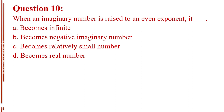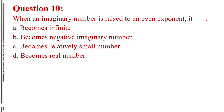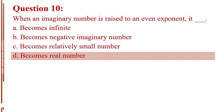Question number ten. When an imaginary number is raised to an even exponent, it blank. Letter A, becomes infinite. Letter B, becomes a negative imaginary number. Letter C, becomes a relatively small number. Letter D, becomes a real number. The answer is Letter D, becomes a real number.